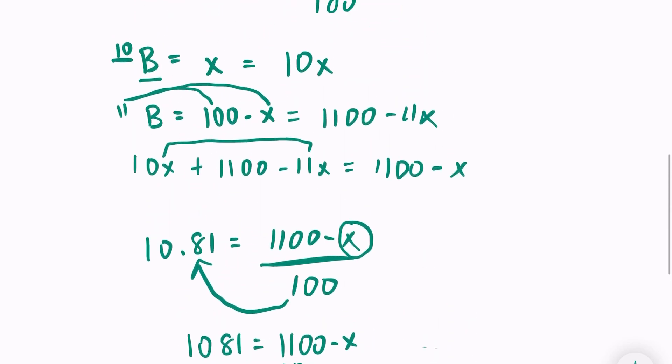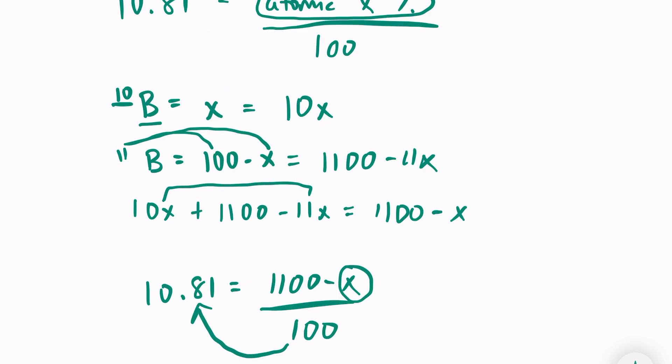Let's come back up and look. I set boron-10 equal to x. That means that boron-10 has a percent abundance of 19%. And boron-11, I set equal to 100 minus x, so boron-11 is equal to 81% abundance.